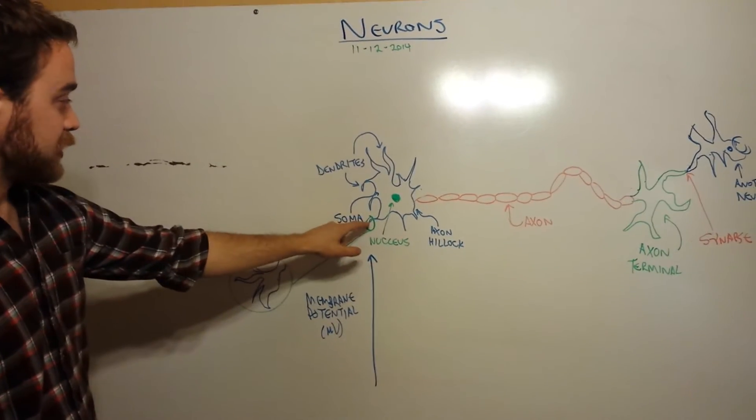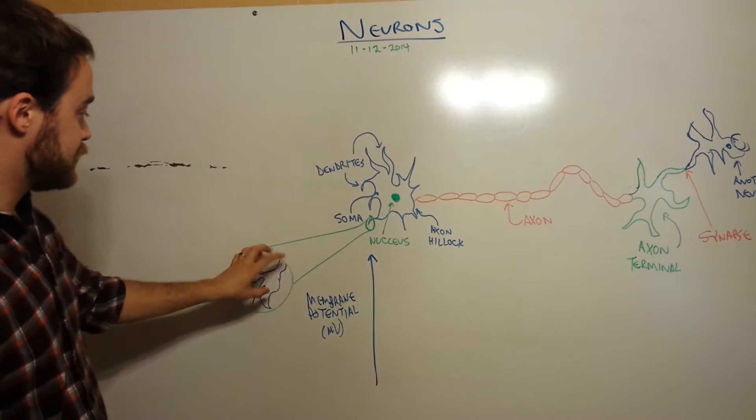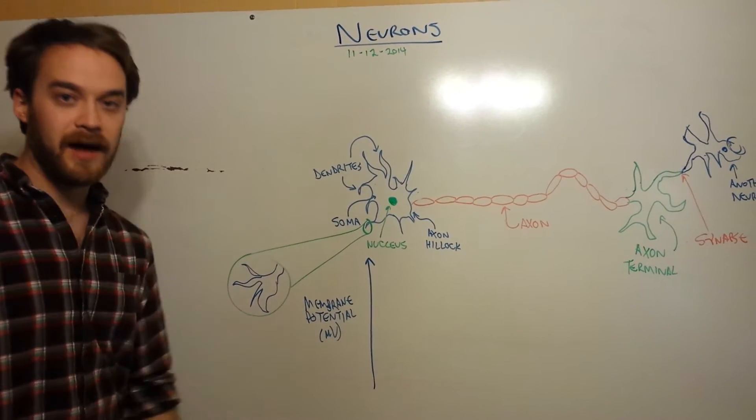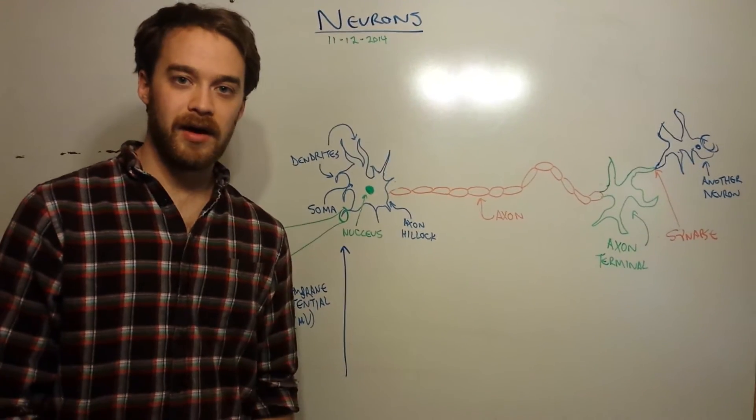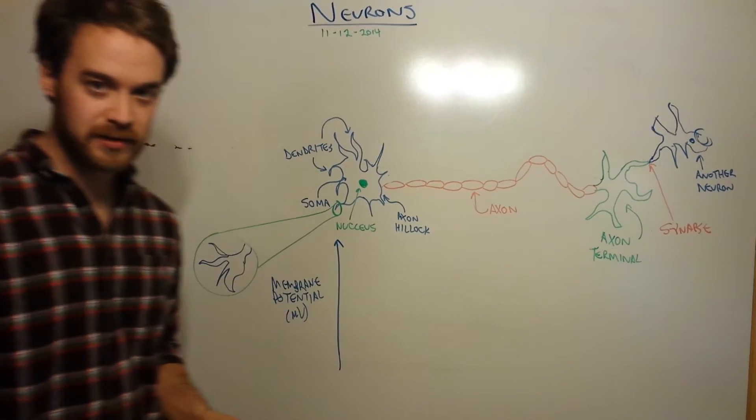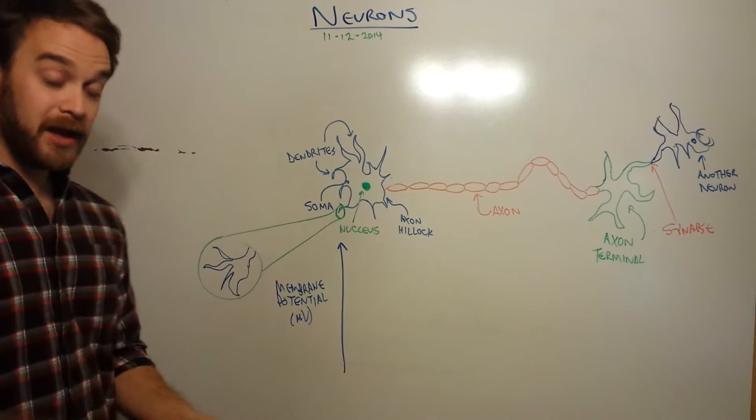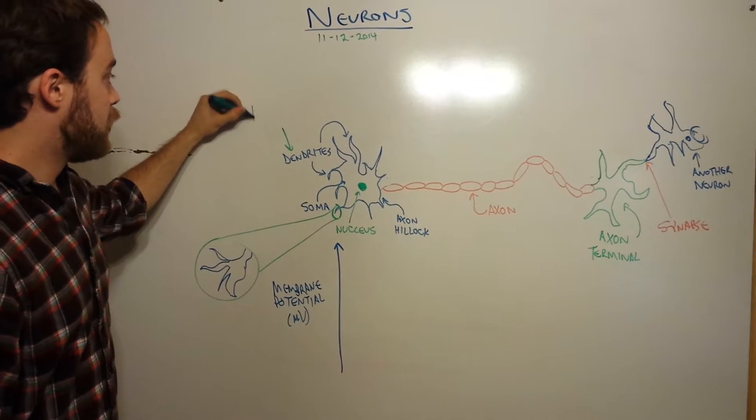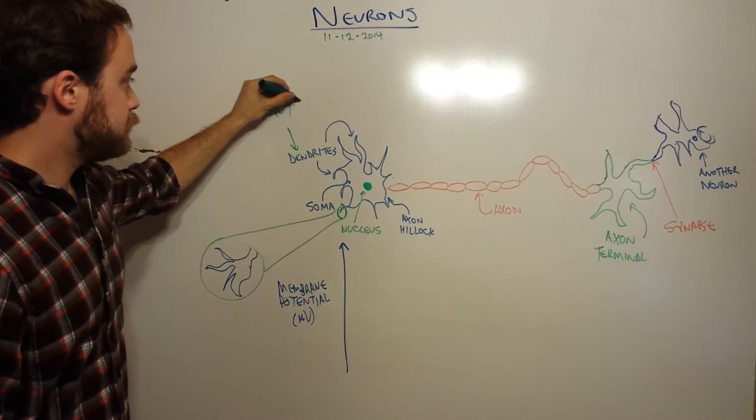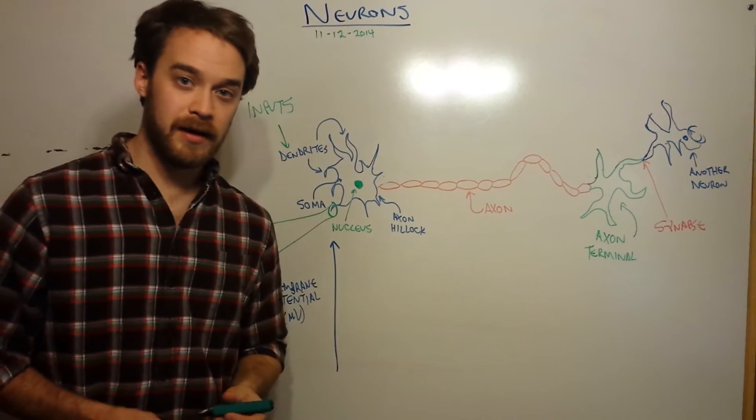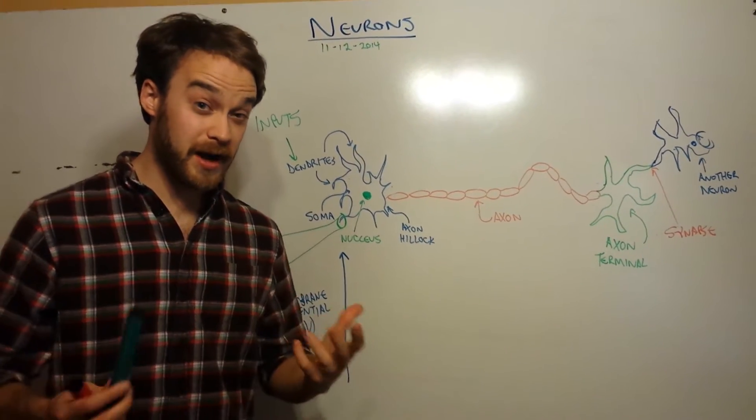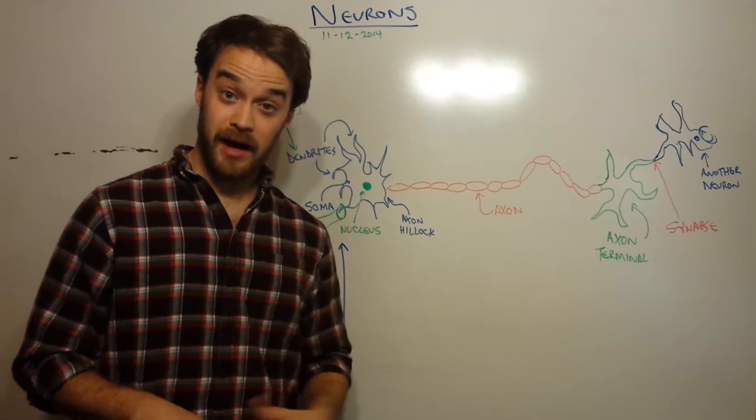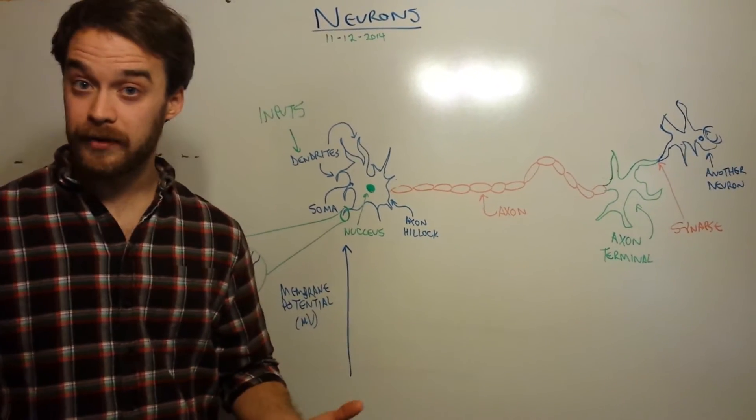You can see there's a close-up of one of the little points, and it branches off more. Go online and maybe I'll link some good neuron pictures in the description for this video. Important thing to understand here is that the dendrites are inputs. So they are the part of the physical neuron that allow it to receive signals from other neurons or from sensory inputs.